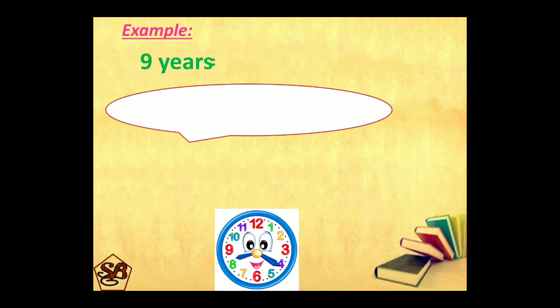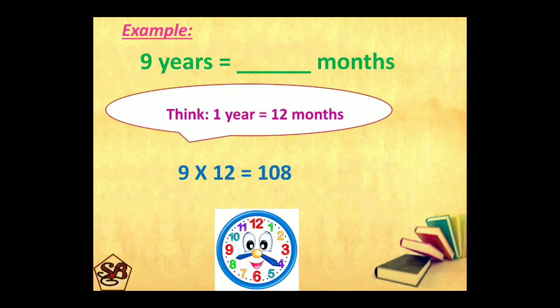Another example: 9 years into months. Now, we are converting from years to months. 1 year is equal to 12 months. So, multiplying 9 by 12 is equal to 108. That means it is 108 months.